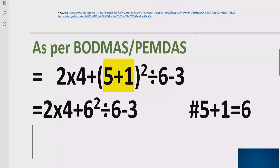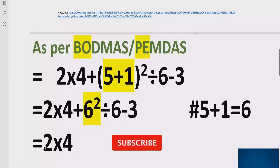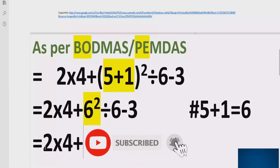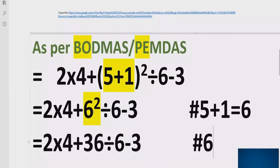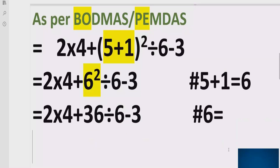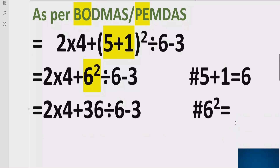Now move forward. Step number two is to solve the exponent part. 6 raised to power 2 means 6 multiplied by 6, which equals 36. So the expression becomes: 2 multiplied by 4, plus 36, divided by 6, minus 3. Reference: 6 raised to power 2 equals 36.